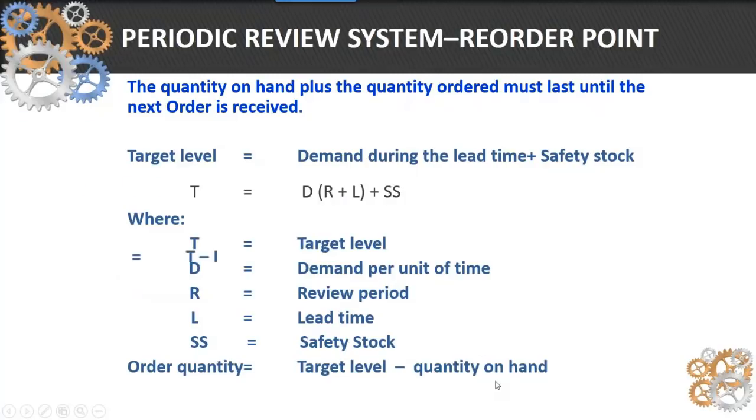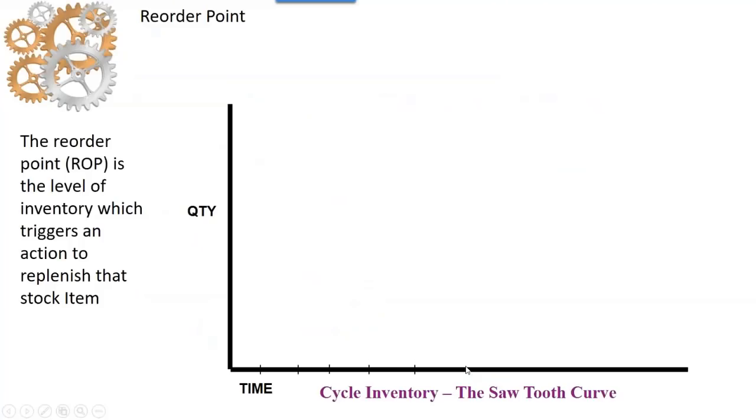That will then give you your target level. So what you have on hand minus the target level is typically what you're going to order. Now this reorder point, if we look at it in terms of this graph, we can see that